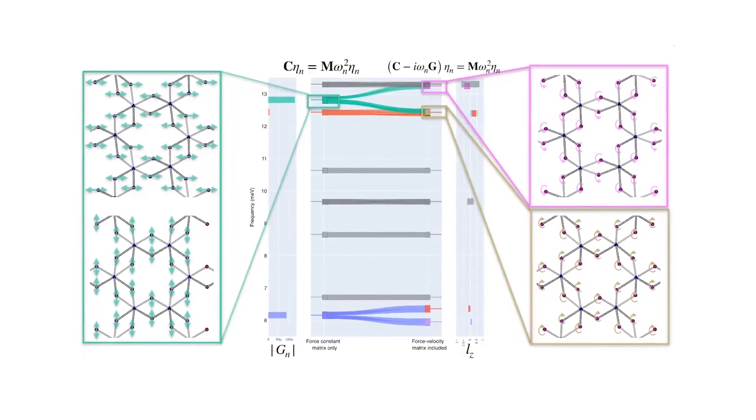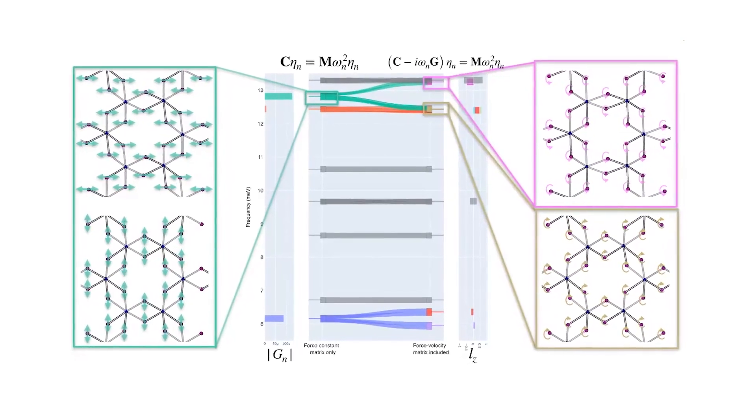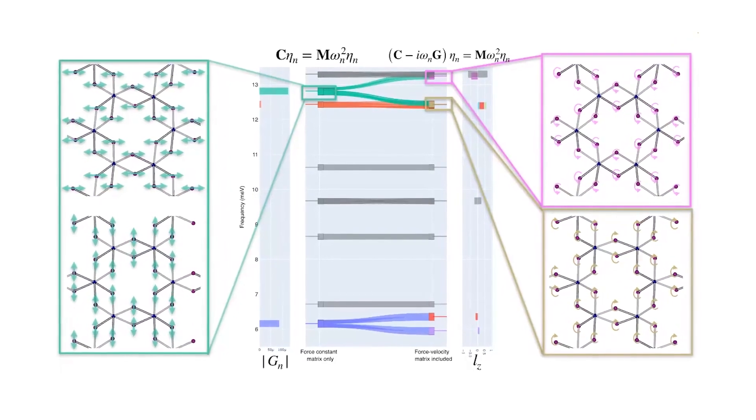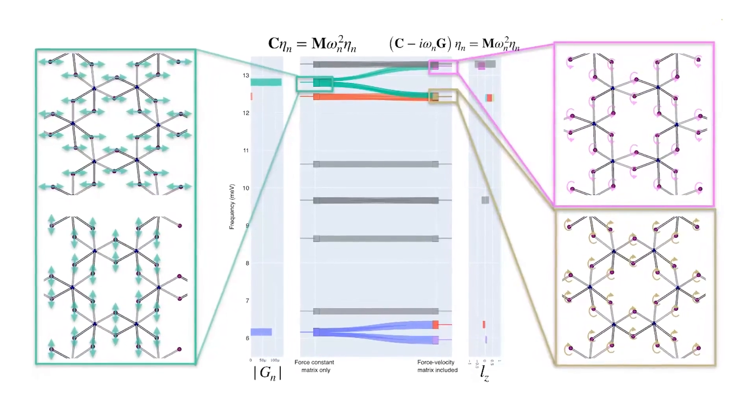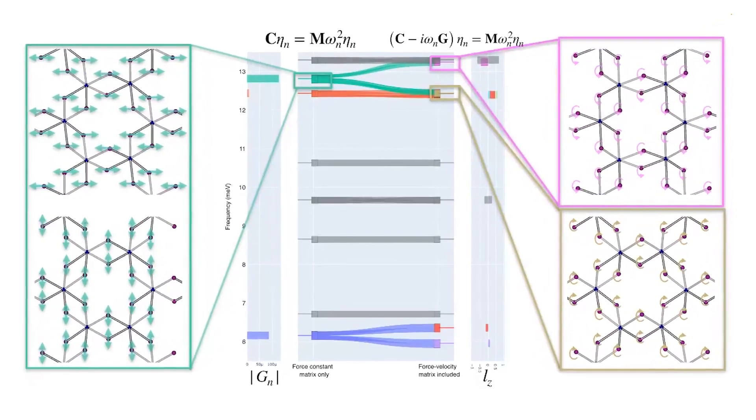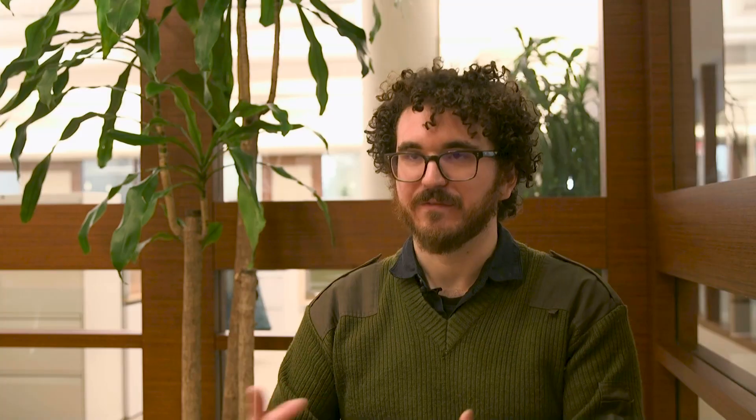Another project at CCQ involves how vibrations in materials are affected by magnetism in ways that have been somewhat neglected. The term that captures this effect is related to changes in the phases of the wave function — the same techniques I used in a different context for computing changes in polarization in a ferroelectric. Even though it's a very different physical effect, there's a mathematically similar aspect involving phases of wave functions used in a different context to obtain a quantity of interest.